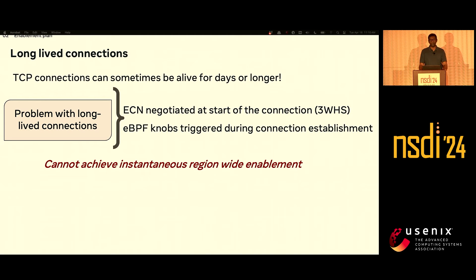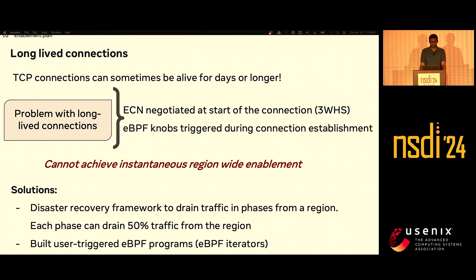Most CCA selector options work at the start of a connection. But with extensive monitoring we built, we saw that there were connections in our data centers that ran for days or longer. This broke our instantaneous enablement goal. For the initial region rollouts, we coupled DCTCP enablement with a disaster recovery framework that Meta had built, which had all inter-service dependencies encoded. We could run phases of trains to flip the majority of connections in a region. Later, with eBPF, we built a program that could iterate through all existing connections and change the congestion control ad hoc.